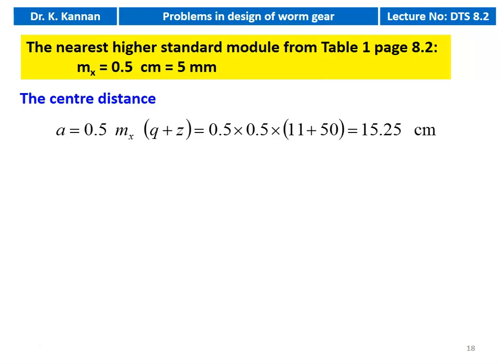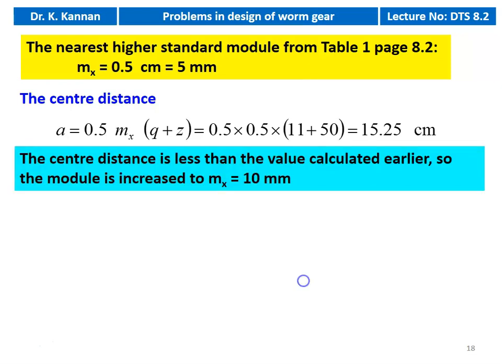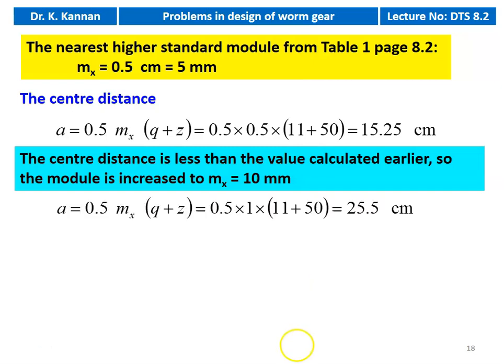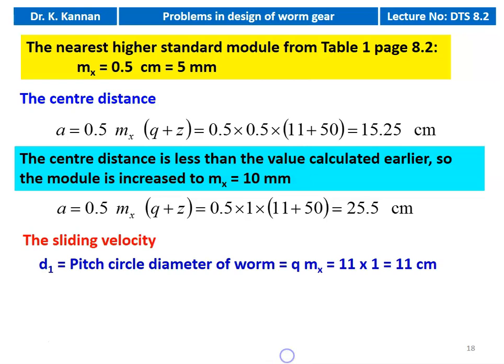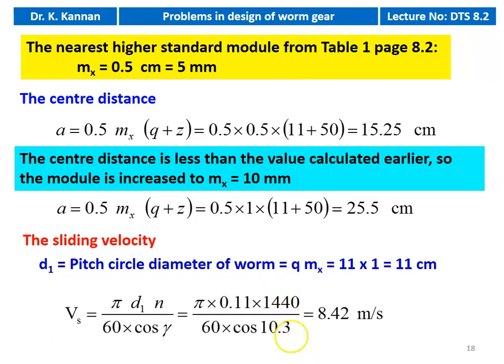Now we calculate the center distance: A = 0.5 × mx × (Q + z) = 0.5 × 0.5 × (11 + 50) = 15.25 cm. This is less than the earlier calculated value, so we increase the module to 10 millimeter. Now center distance: A = 0.5 × 1.0 × (11 + 50) = 25.5 centimeter, which is higher than the previous value. Sliding velocity: D1 = Q × mx = 11 × 1 = 11 cm. Vs = πD1N / (60 × cosγ) = π × 0.11 × 1440 / (60 × cos 10.3°) = 8.42 meters per second.